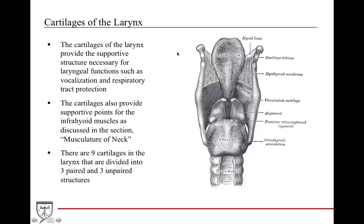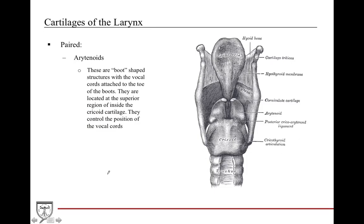Now let's talk about the laryngeal cartilages. The cartilage of the larynx provides the supportive structure necessary for the larynx to do its job — help with vocalization, respiratory tract protection, and everyday functions. It's the cartilage that also provides supportive points for insertion of the infrahyoid muscles discussed in the previous chapter. In total, there are nine cartilages: three paired (six total) and three unpaired.